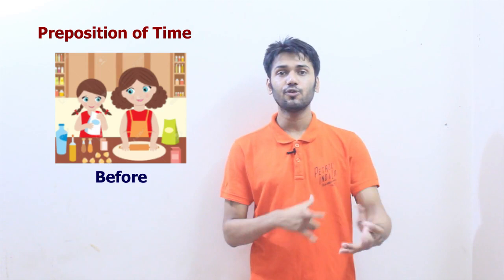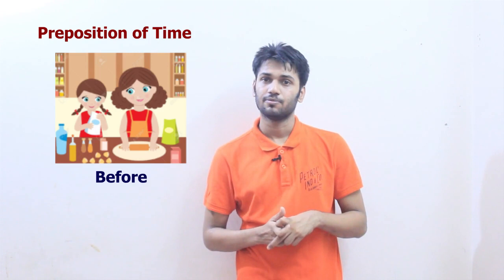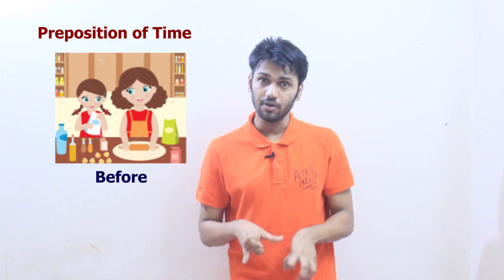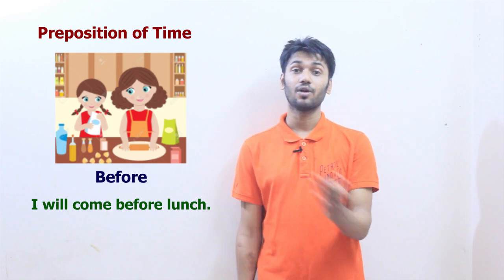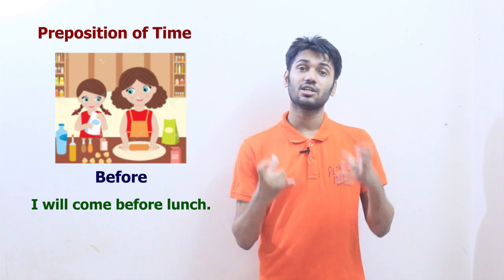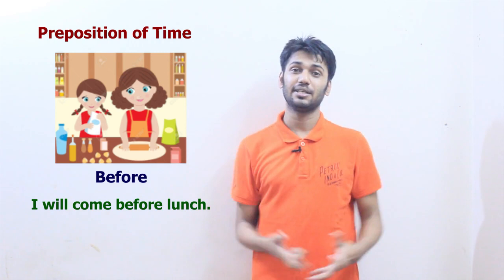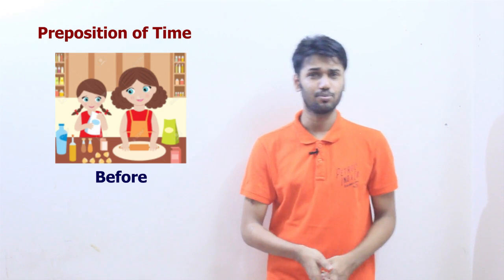The next word is 'before.' Before is another preposition pointing towards time — something that happened in the past relative to another event. He came here before you. I will come before lunch. It is talking about a point of time that comes before another point of time. Four o'clock is before five o'clock. Explain it in your own language more elaborately so students understand it easily.